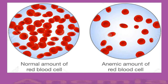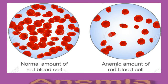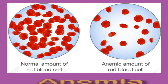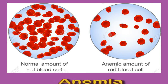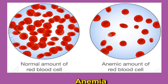Anemia is a common blood disorder that affects over 3 million people in the United States. It occurs when there are not enough red blood cells or when they do not function well. Red blood cells normally carry oxygen around the body. Symptoms of anemia include shortness of breath, fatigue, dizziness, weakness, headaches, irregular heartbeat, chest pain, and pale or yellow skin.